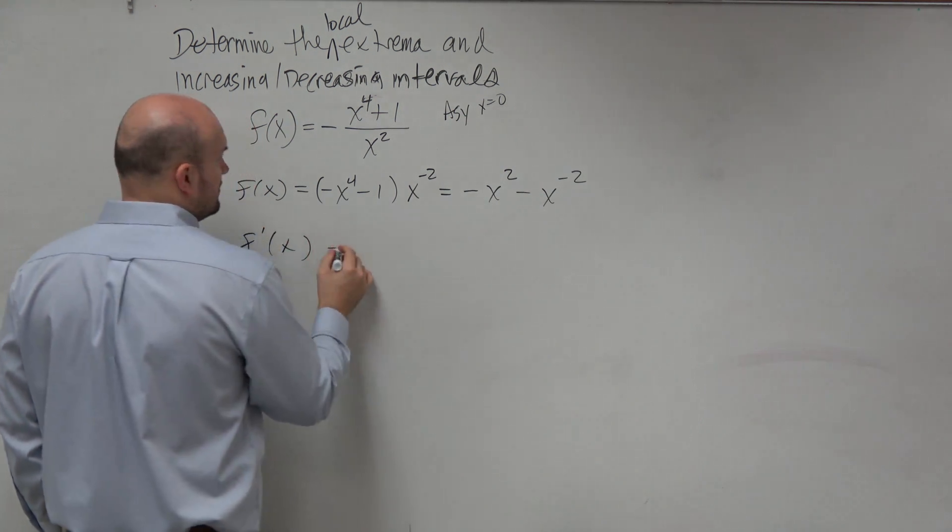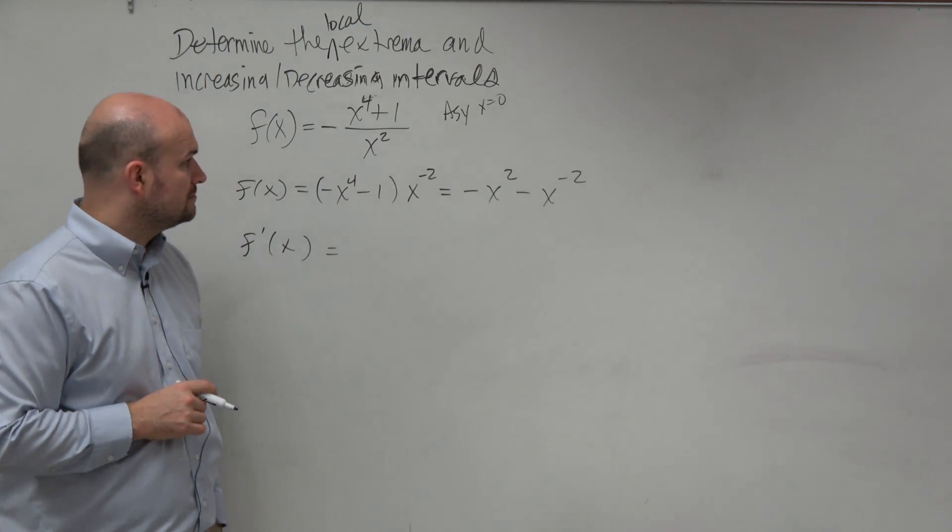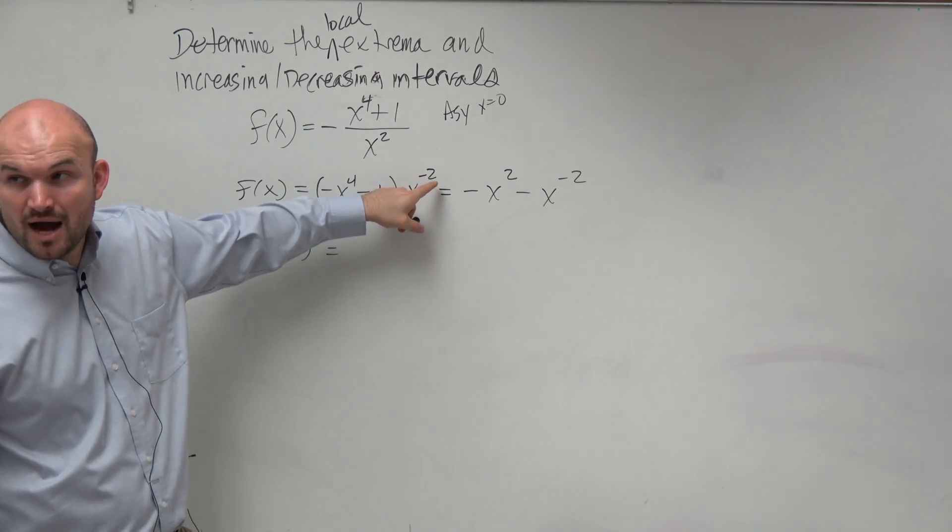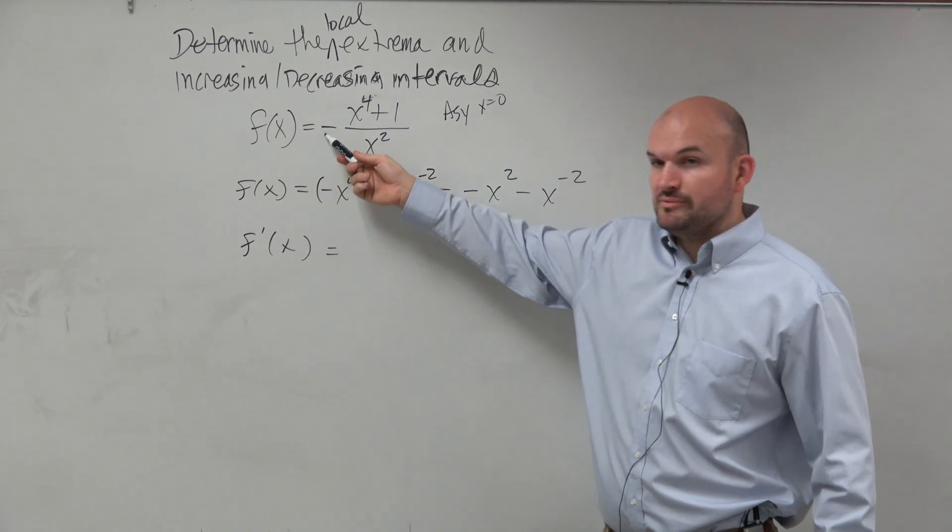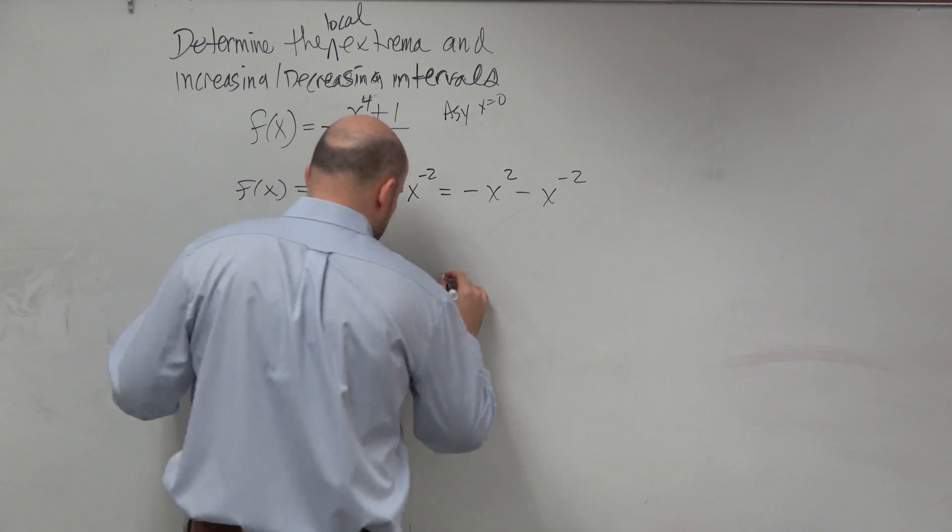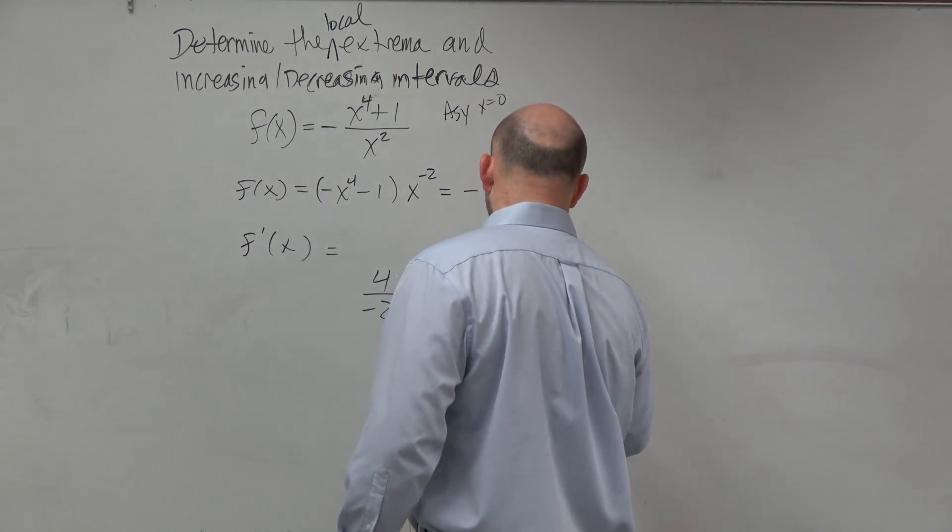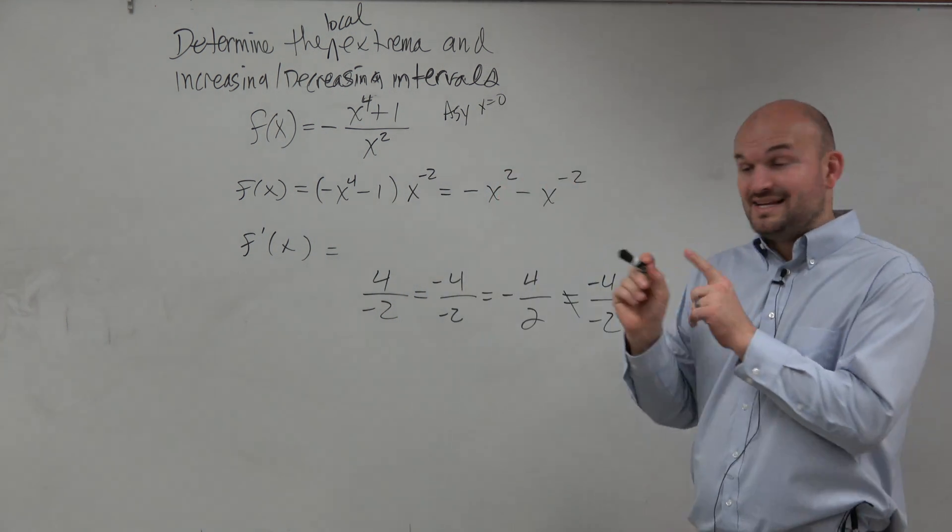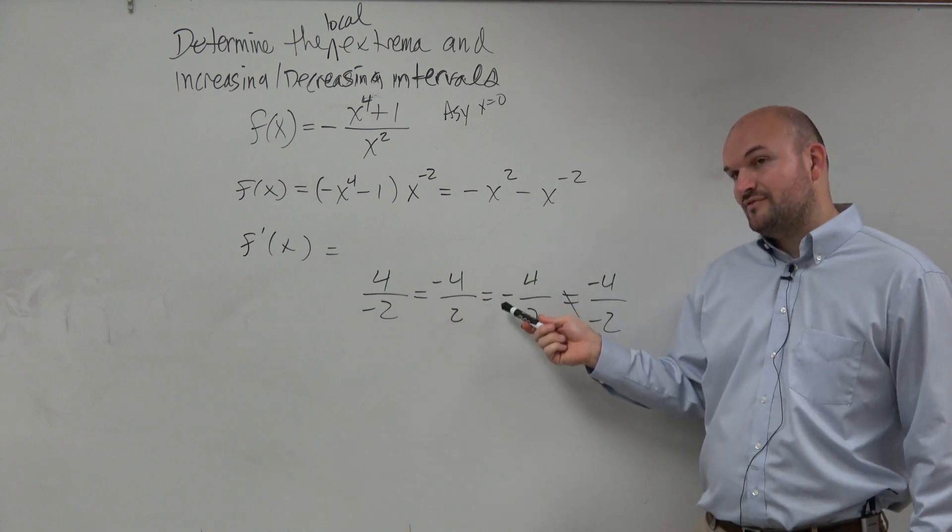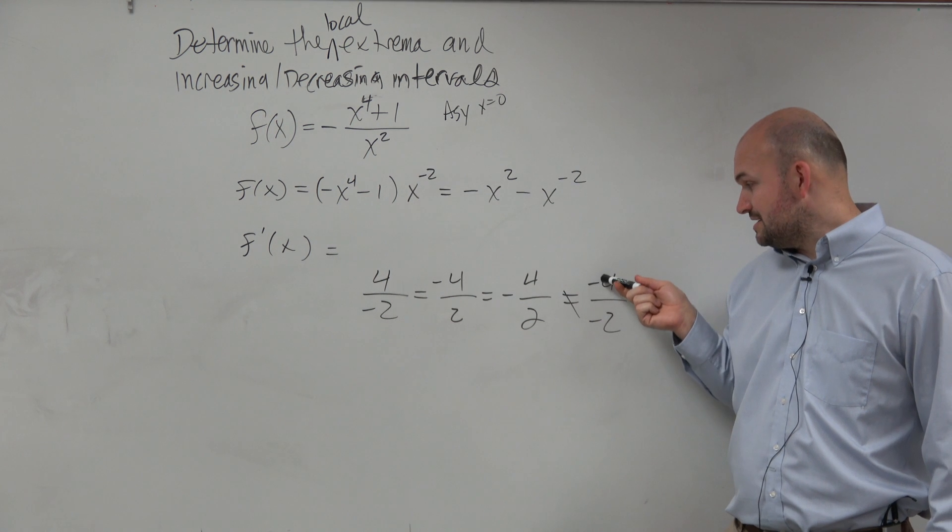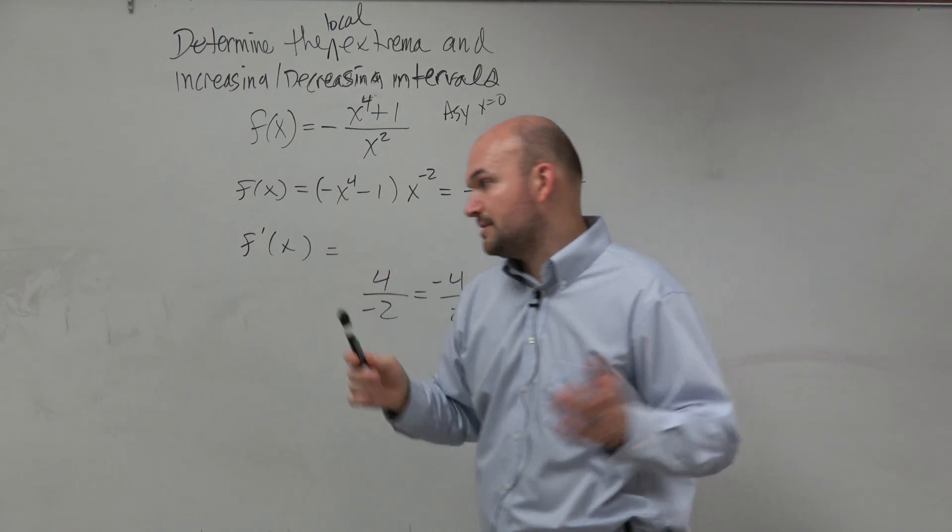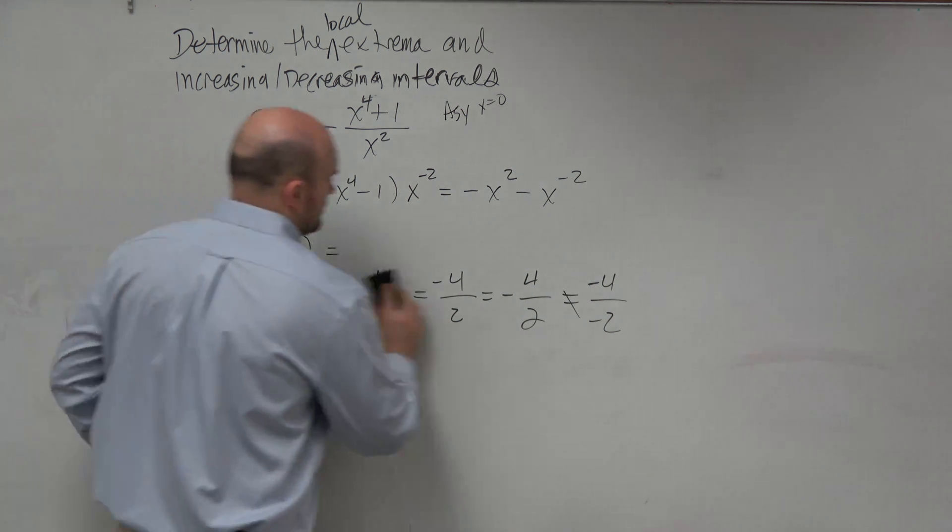So I distributed the negative to the numerator. When you have a negative in front, you either put it to the denominator or to the numerator, but you never put it to both, because a negative over negative is now positive. So it didn't matter which one you want to do. You could distribute it to the numerator or denominator, but you have to pick one.